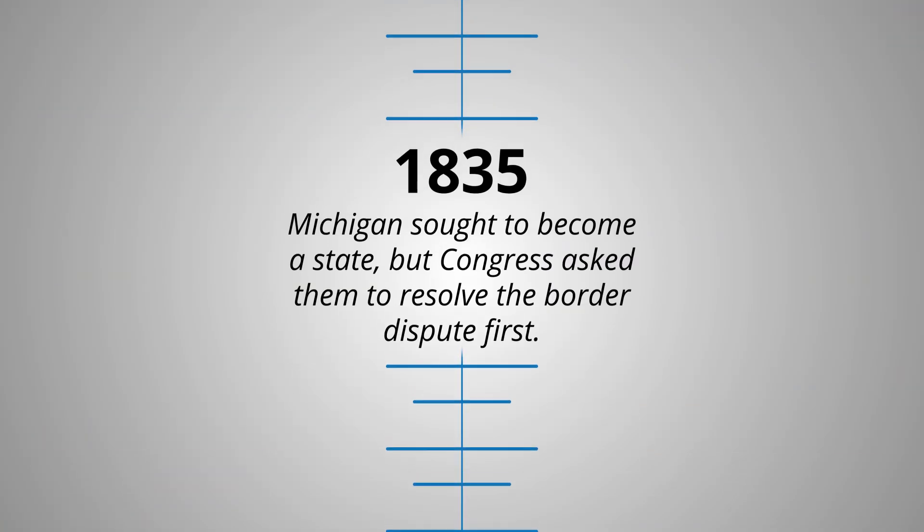In 1835, Michigan sought to become a state, but Congress asked them to resolve the border dispute first. So before Michigan could become a state, the dispute with Toledo would need to be settled. The conflict reached its peak and both Ohio and Michigan sent soldiers to the Toledo Strip. There were a few small fights, but no major battles.